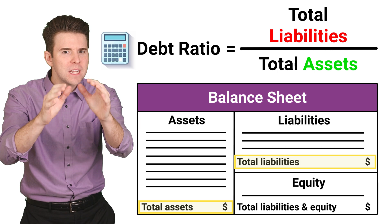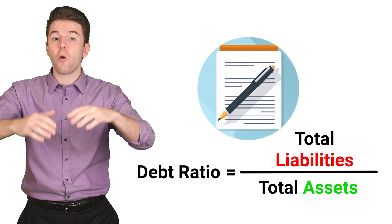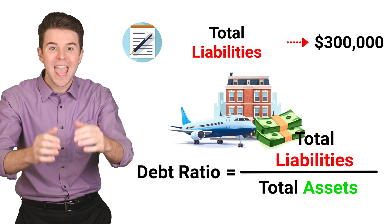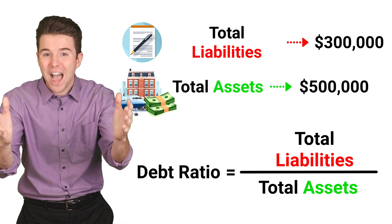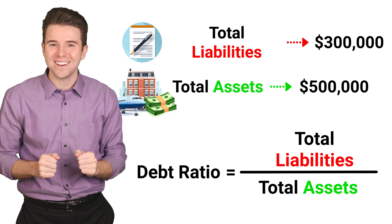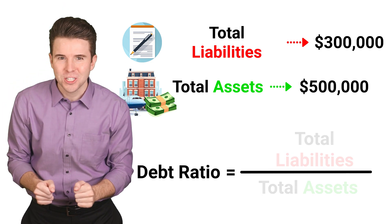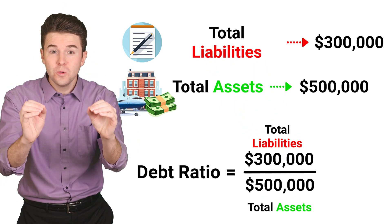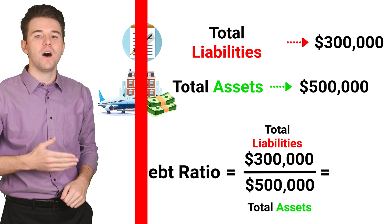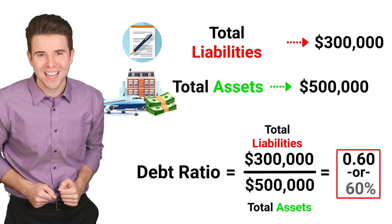Now, to put this into practice, let's say a company reported total liabilities of $300,000 and total assets of $500,000 at the end of the year. To compute the debt ratio, we divide these two numbers to get a debt ratio of 0.6, or 60%.